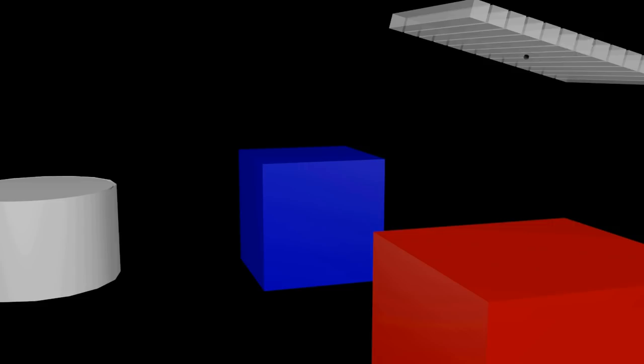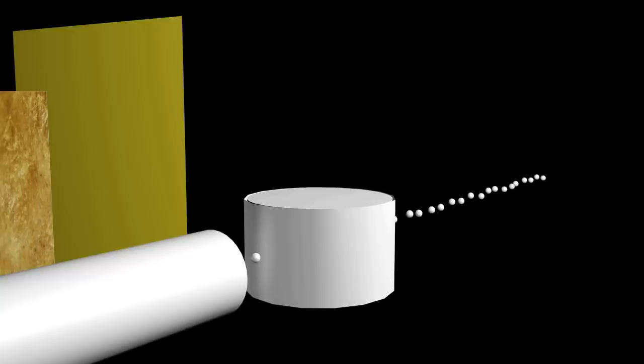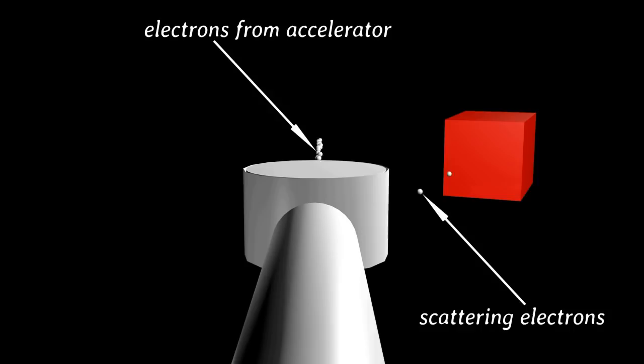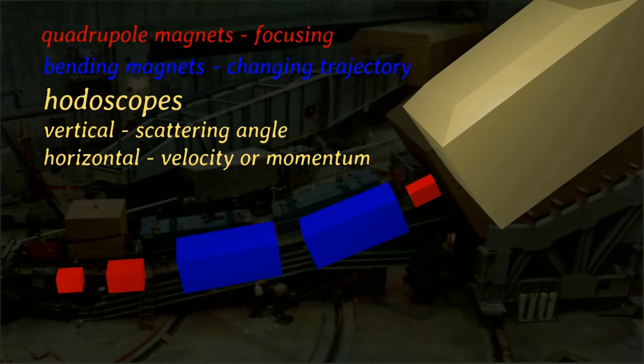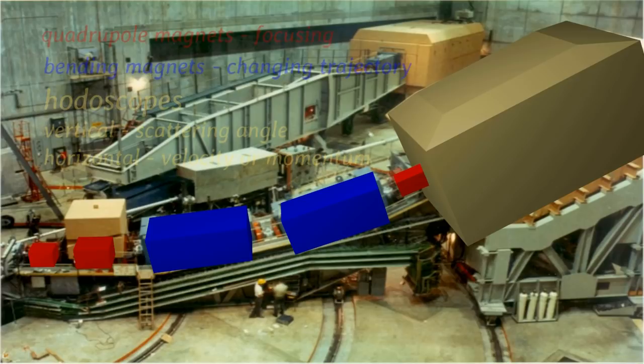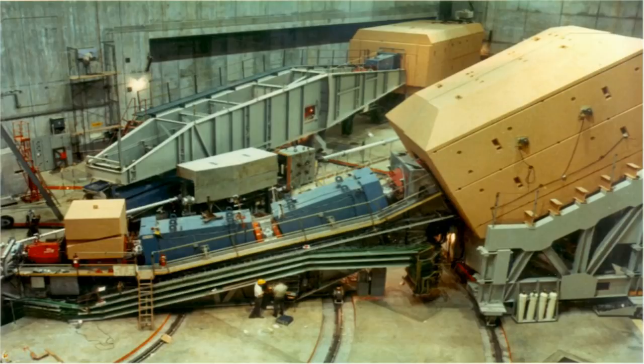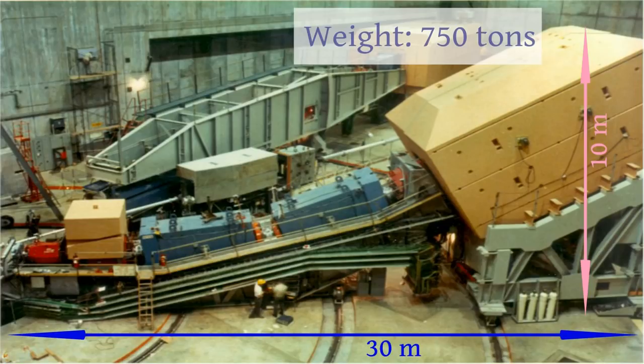Now we are ready to construct the SLAC-MIT detector, placed at some angle to the direction of motion of electrons. One hodoscope measures this angle; a system of magnets changes the trajectory of electrons so their momentum or velocity can be found with the help of a second hodoscope. After the two hodoscopes, a calorimeter was installed, which absorbs each electron and measures the absorbed energy. This is a photo of the detector used in the SLAC-MIT experiment — you can see people near it to appreciate its real size, about 10 to 30 meters, and its weight of about 750 tons.